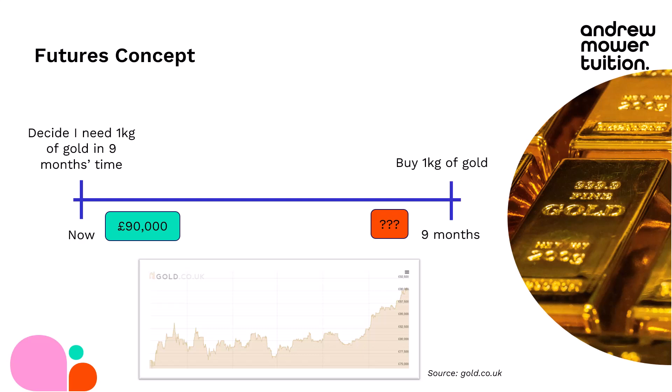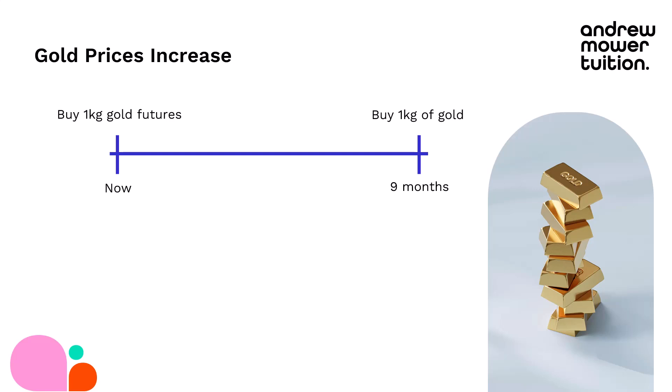Now I'm going to show you two scenarios. First: what if the price of gold increases? I've spoken to some traders and they've offered me futures at £92,000. That means I'm going to buy futures now for £92,000, covering a kilogram of gold — exactly the amount I need for nine months' time. We're assuming a perfect hedge here. I'm locking into a cost of £92,000, which is a little more than the £90,000 today, but I'm happy to do that because I'm worried it could rise to £100,000 or £120,000.